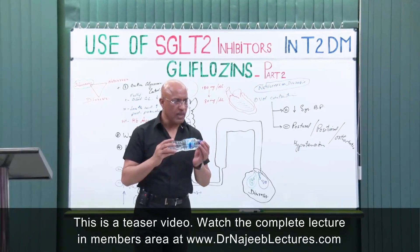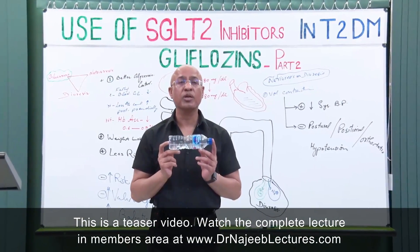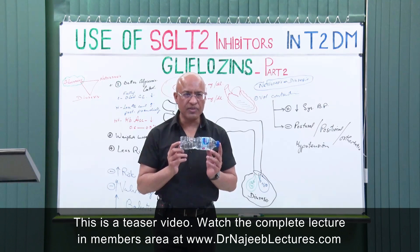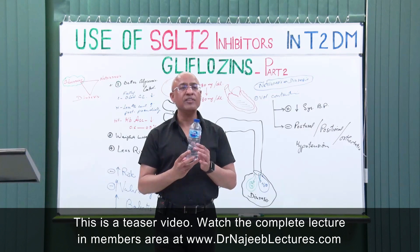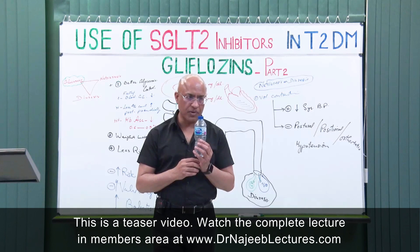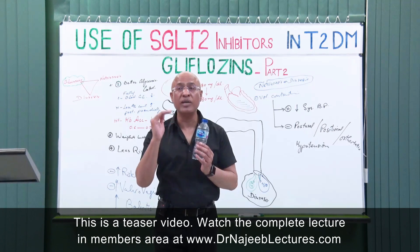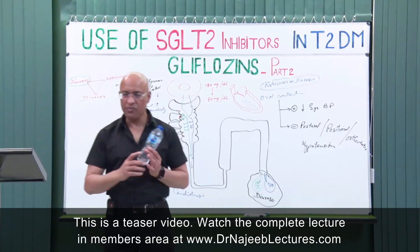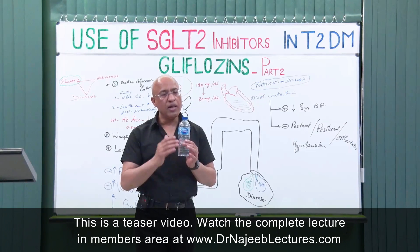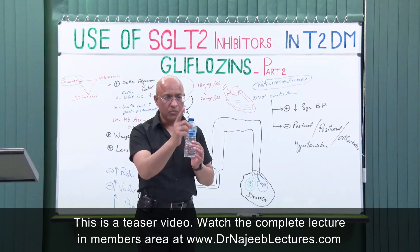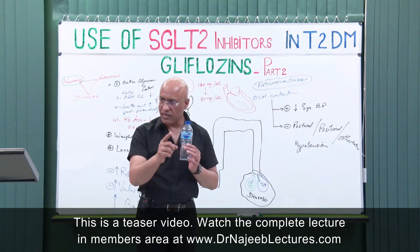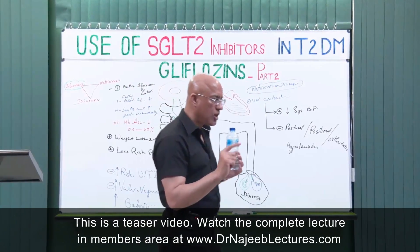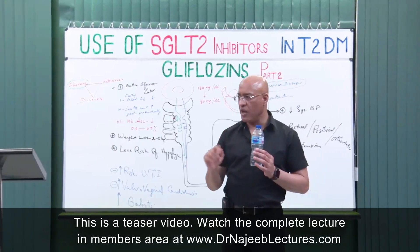Now, what is postural hypotension? Postural hypotension, positional hypotension, or orthostatic hypotension is a condition in which a person goes from lying down position and suddenly sits up or stands up, and there is a significant drop in blood pressure. Systolic blood pressure falls more than 20 mmHg or diastolic blood pressure falls more than 10 mmHg. If this drop is observed on sitting or standing, we say the patient is having postural, positional, or orthostatic hypotension.